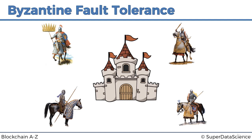Among these generals there is one main general — the commander — and at the same time there's also a traitor. They don't know who among the generals is the traitor, but there usually is one, and the traitor is there to put roadblocks in their way so they don't reach consensus. The question is: how do they come up with a consensus protocol — an algorithm that will help them come to a decision?